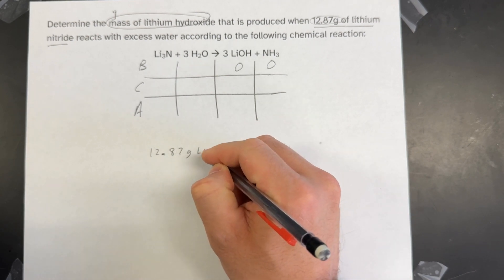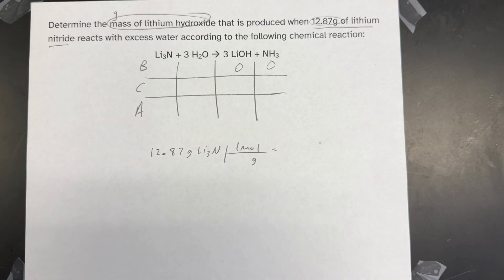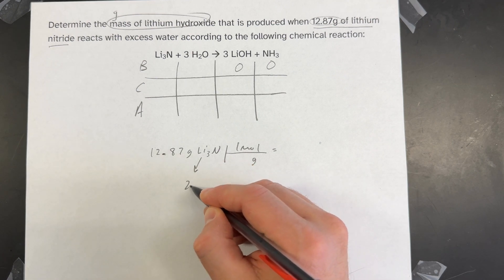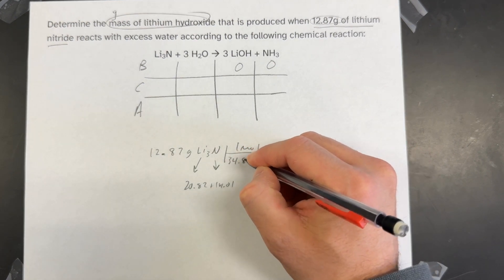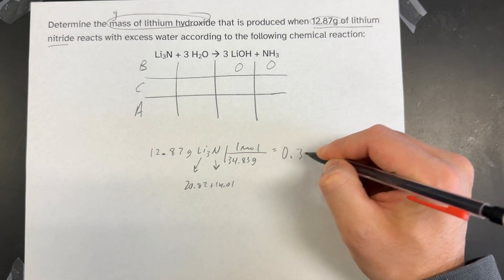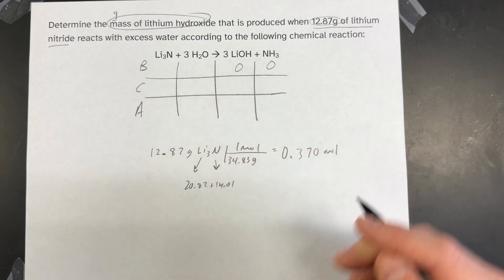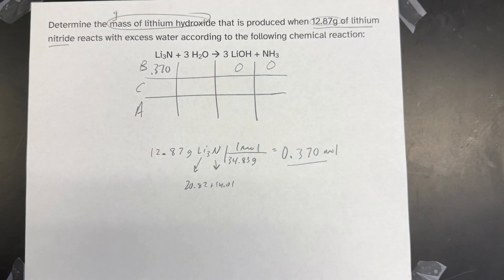Converting 12.87 grams of lithium nitride to moles: the molar mass of Li3N is 3 times 6.94 for lithium, which is 20.82, plus 14.01 for nitrogen, giving a molar mass of 34.83. So 12.87 divided by 34.83 gives me 0.370 moles of lithium nitride. I'll plug 0.370 into my table. The question says I have excess water, so I can ignore the column for water.